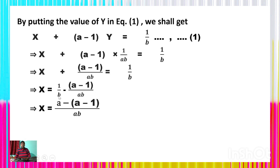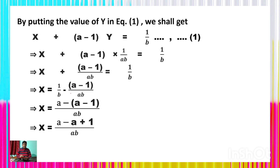Taking LCM as ab: x = a/(ab) − (a−1)/(ab). Removing the bracket: a minus (a−1) = a − a + 1. The +a and −a cancel, giving x = 1/(ab). Thus we get x = 1/(ab) and y = 1/(ab).